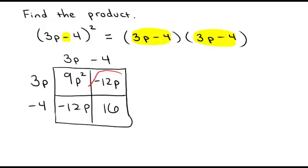I can combine some like terms here. I've got negative 12p and negative 12p, and if I add those together, that's going to give me negative 24p.